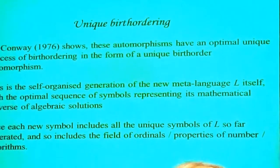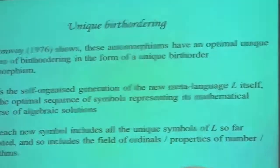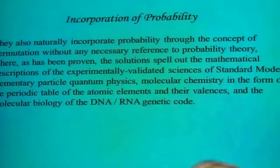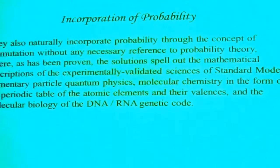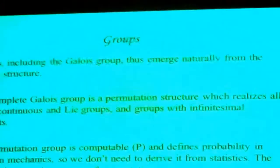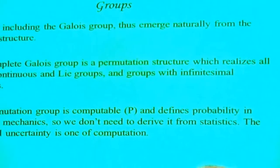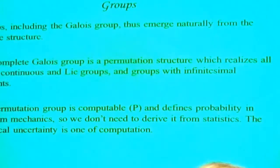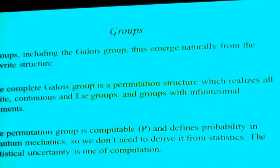This is the self-organized generation of the new matter language itself, with an optimal sequence of simple properties of a mathematical universe of algebraic solutions. We get probability automatically through the concept of permutation, without even referring to probability theory. The groups, including the Galois group, emerge naturally from the rewrite structure because the nilpotent structure is a fundamental group. The permutation group is computable and defines probability in quantum mechanics — we don't need statistics for it; computation is where we get our statistics.